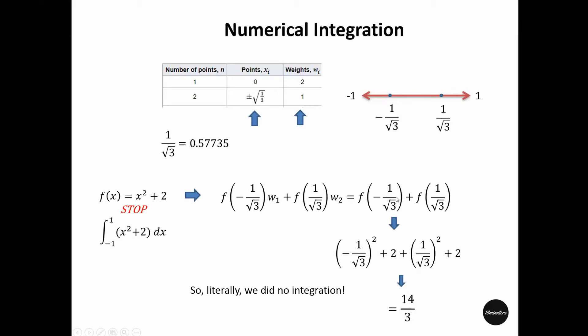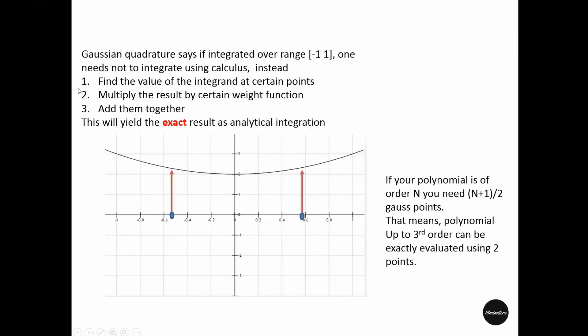Just notice that by doing that, we avoid doing the actual integral. We basically found what these function values are at these two special points and then add them together. These are the three functions that we have taken to get the Gauss integration. By using these two points at minus 1 by root over 3 and plus 1 by root over 3, we can integrate polynomials up to the power of 3.